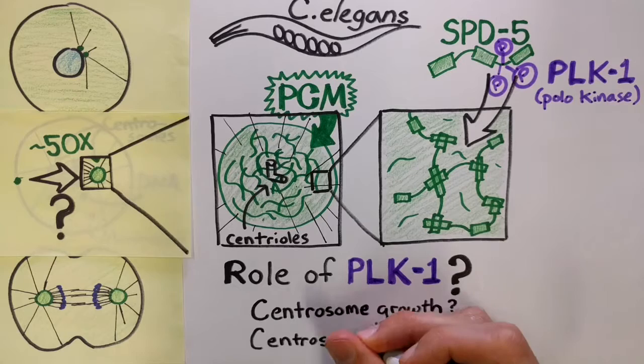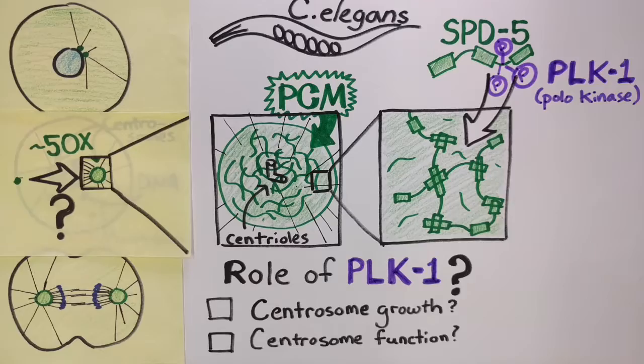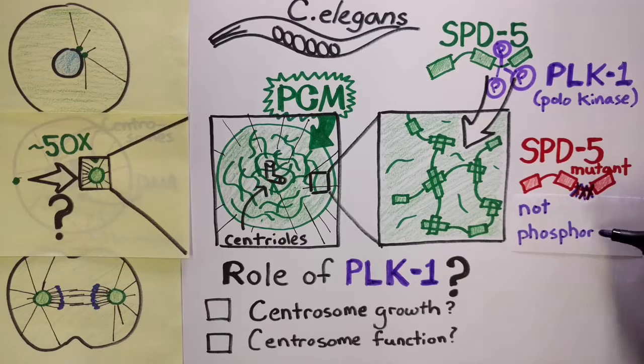In our new work published in Biology Open, we addressed these questions by using an SPD-5 mutant that can't be phosphorylated by PLK-1. We found that this mutant can still bind to existing PCM and recruit other PCM proteins, but it causes centrosomes to grow more slowly.